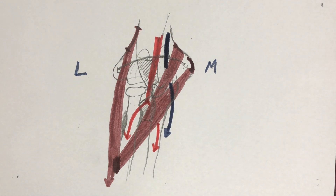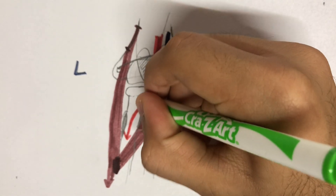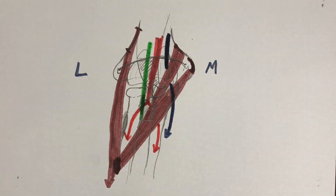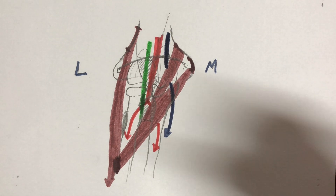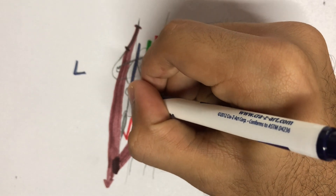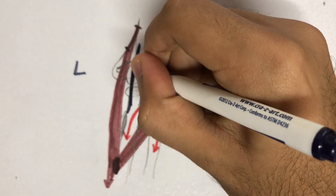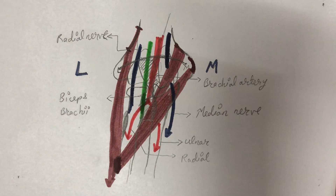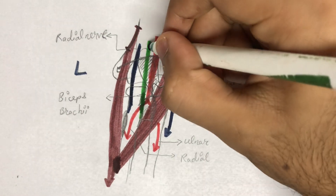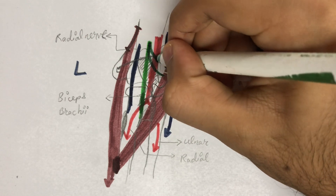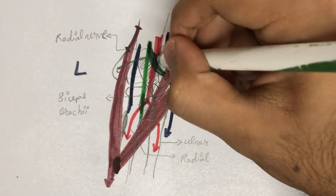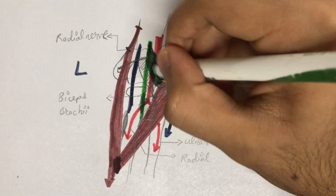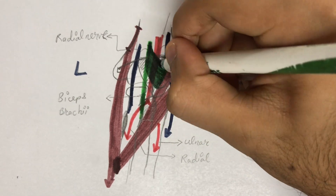Moving laterally, the biceps brachii tendon inserts onto the posterior aspect of the radial tuberosity. The most lateral content is the radial nerve, which runs downwards and enters the posterior compartment. Moving towards the surface, the biceps aponeurosis covers part of the brachial artery and part of the median nerve, and inserts onto the coronoid process.